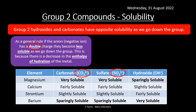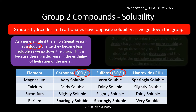As we go down the group there's a lower enthalpy of hydration for the metal. If the anion has a single charge, compounds become more soluble as we go down the group. The lattice dissociation enthalpy — the energy required to break the giant lattice apart — decreases, and this outweighs the enthalpy change of hydration of the metal ion.